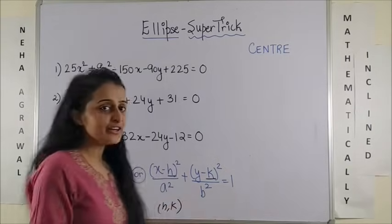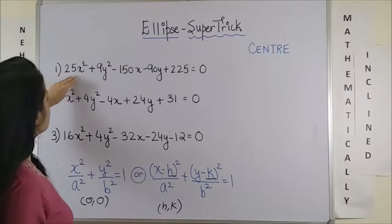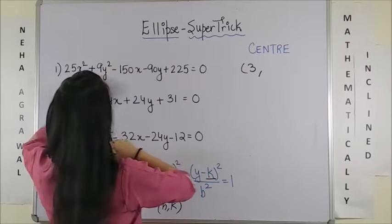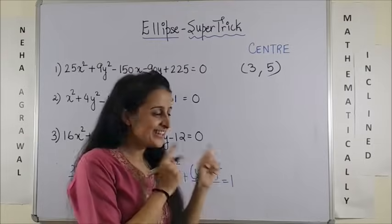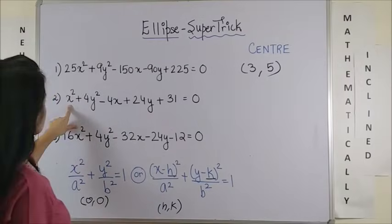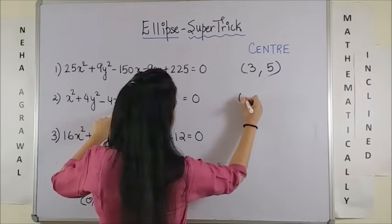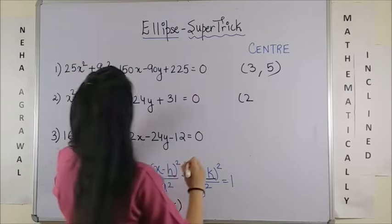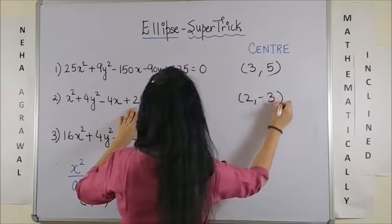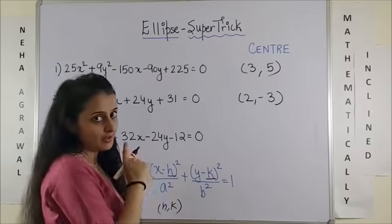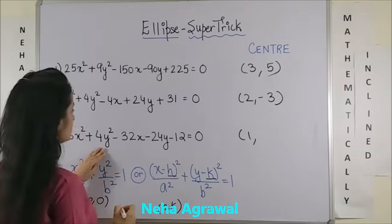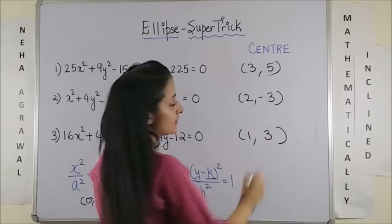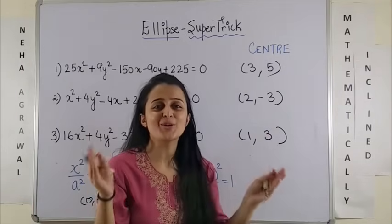So, the center for the first ellipse should be, that's it. For the second one, it should be, bingo. And the last one, wasn't that so quick?